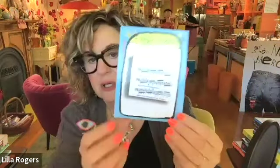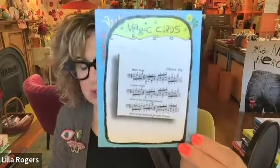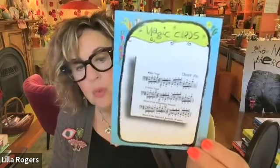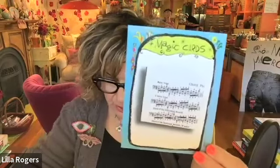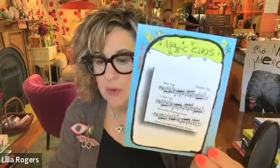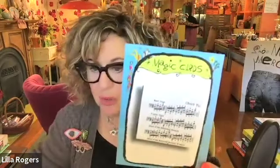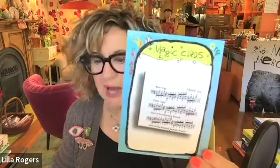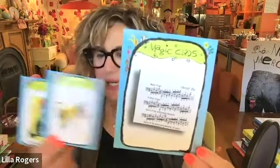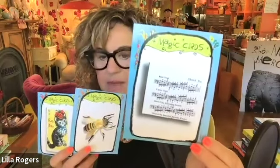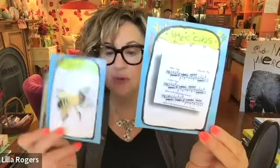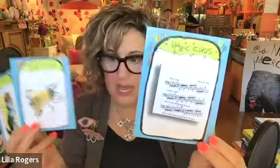Now we need a conflict. Every story needs a conflict. I'm grabbing these randomly. So this is a musical score — a song. What is the conflict that these two characters have? Getting ready for the school talent show — genius! Buzzing too loud. The bee hums all the time and kitty needs her peace and quiet. The bee won't stop humming. That's really cool that you took a natural feature of this character and included that.